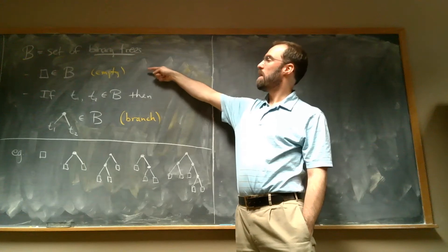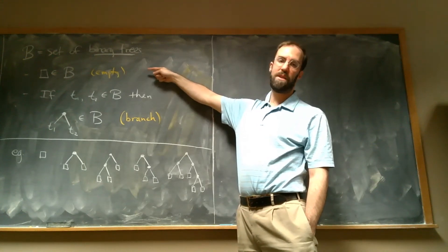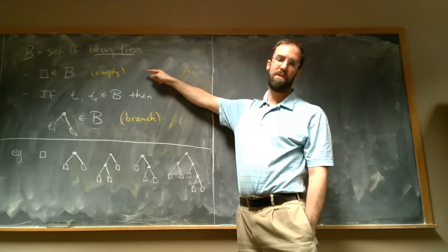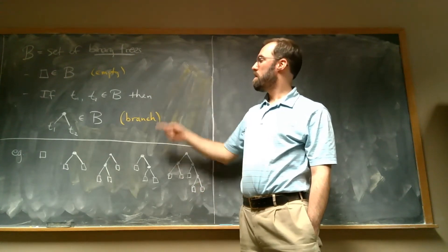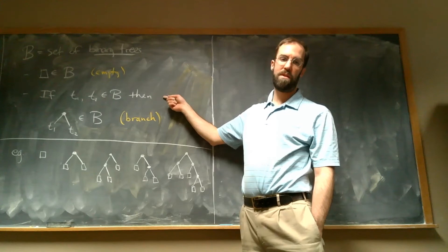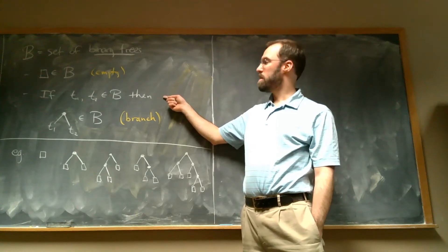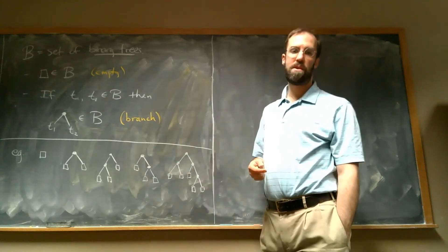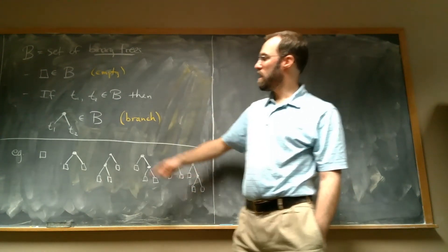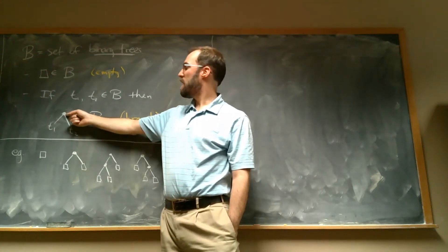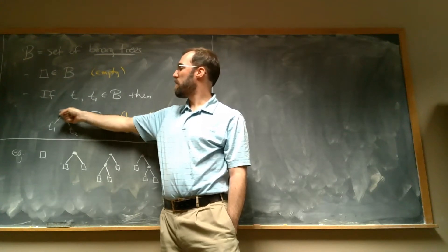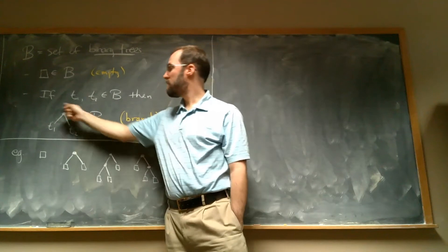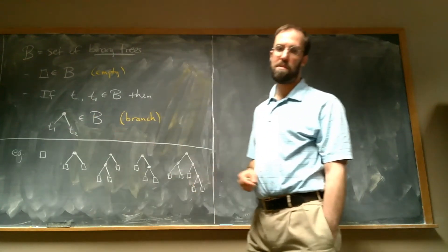First of all, I declare as a base case that this square thing, which I'm going to call the empty tree, is an element of my set. And then I have this single recursive rule that says if I have two trees, T1 and T2, that are already in my set, then I can make this new tree by having a branch node at the top and then T1 on the left and T2 on the right. And this thing is now going to also be a member of my set B.